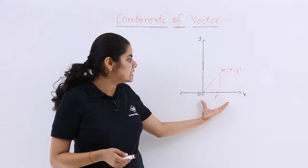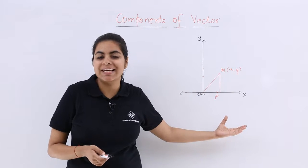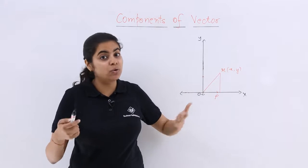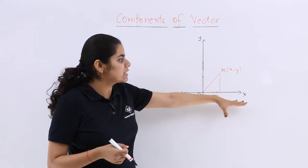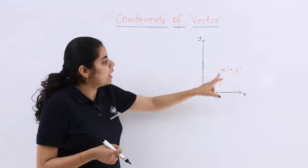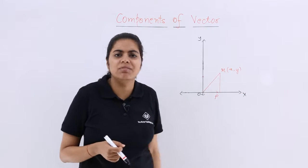Now components of a vector. I see a diagram in front which has been drawn by me and I hope you can also see that. Now as you can see this is the coordinate axis, y axis, x axis, this is the origin, m is a point with the coordinates x and y.